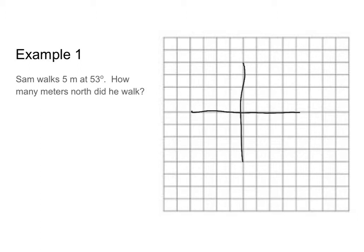We know that Sam walked five meters at 53 degrees. So 53 degrees is gonna be somewhere between 0 and 90. So we're gonna draw Sam kind of like that, going about five meters this way. So here is going to be where Sam ends up.